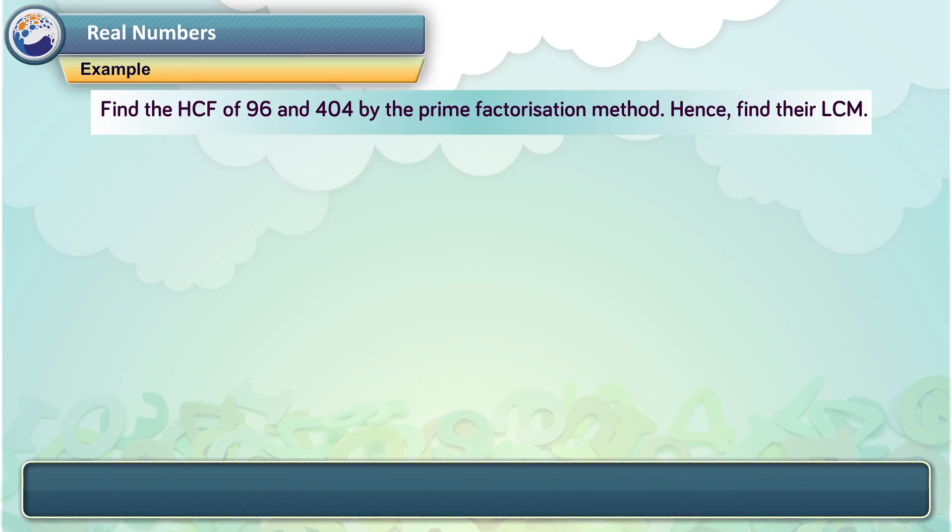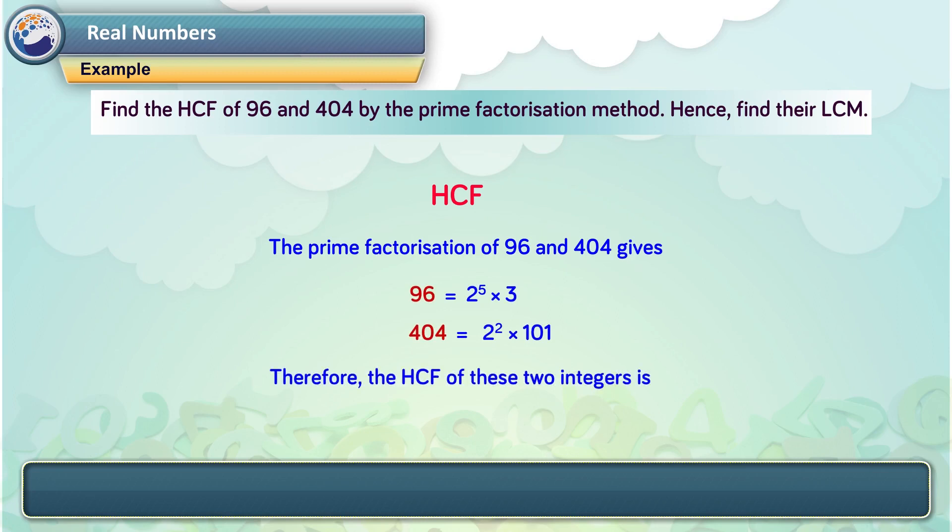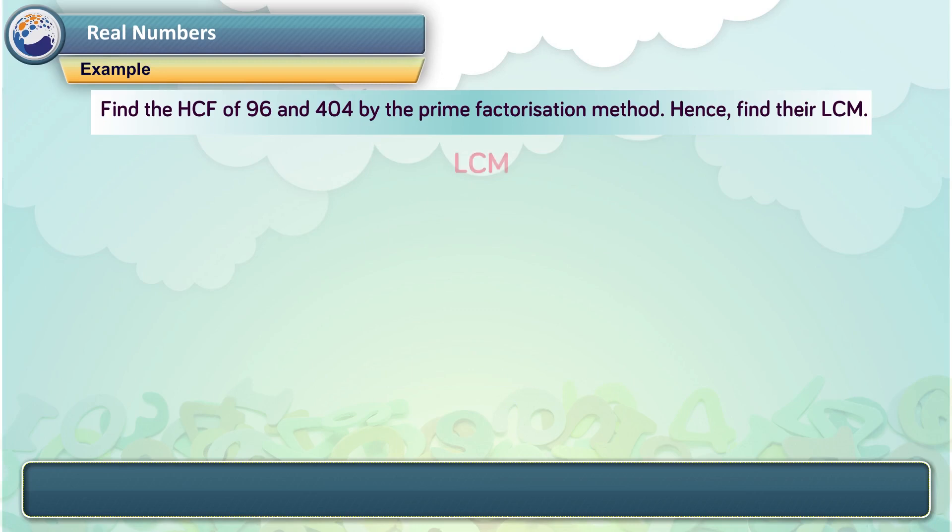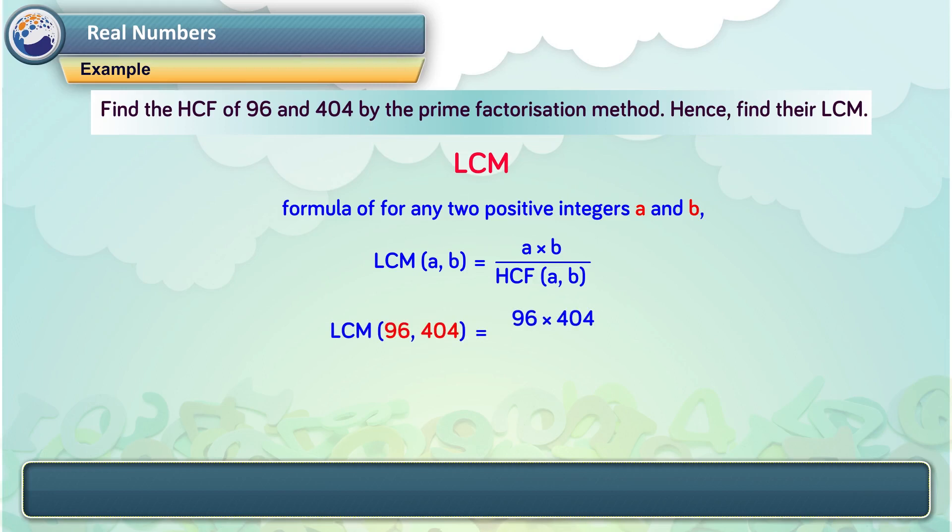Let us take another example. Find the HCF of 96 and 404 by the prime factorization method. Hence, find the LCM. Solution. The prime factorization of 96 and 404 gives 96 is equal to 2 raised to 5 times 3. 404 is equal to 2 raised to 2 times 101. Therefore, the HCF of these two integers is 2 into 2 is equal to 4. Formula to find the LCM of any two positive integers A and B using LCM is, LCM of AB is equal to A into B upon HCF of AB. Therefore, LCM of AB is equal to 96 into 404 upon 4 that is equal to 24 into 404 is equal to 9696.